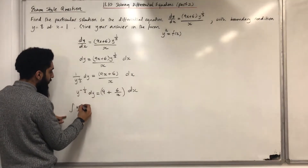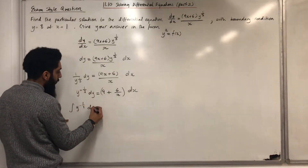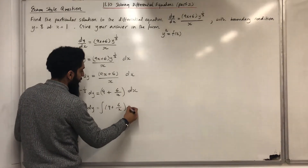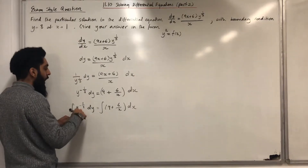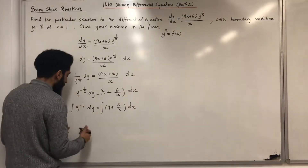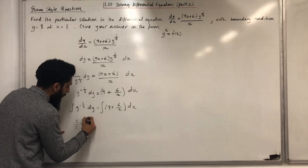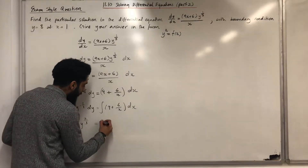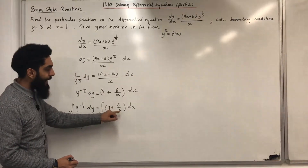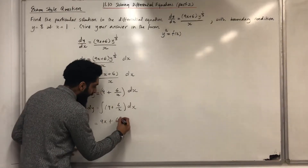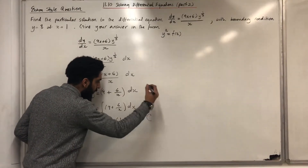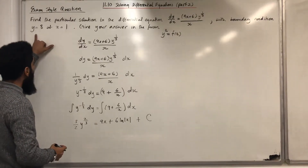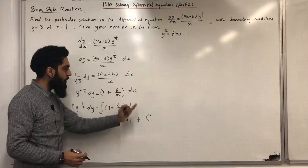Now I can get rid of the differentials on both sides by integrating both sides. So I get the integral of y^{−3} dy = the integral of (9 + 6/x) dx. The integral of y^{−3} dy is (3/2) y^{2/3}, equal to 9x plus the integral of 6/x dx which is 6 ln|x| + c, the constant of integration. The next step is to substitute y = 8 and x = 1 to work out c.